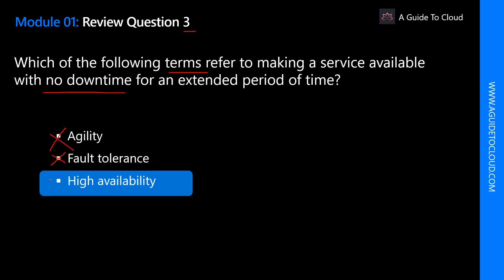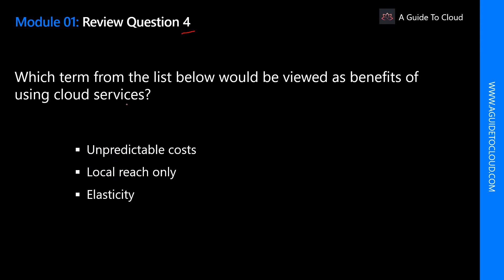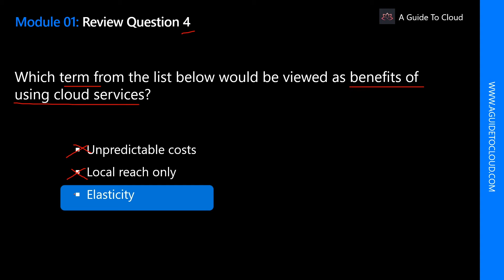Question 4: Which term from the list below would be viewed as a benefit of using cloud services? The keyword is 'benefits of using cloud services.' Unpredictable cost is not correct because you can predict the cost of cloud services — there are tools like the TCO calculator and Azure pricing calculator to help with that. Local reach only is definitely not correct because cloud is global, so you can provision services anywhere in the world or closer to a user. The correct answer is elasticity. Some other common benefits include agility and economics of scale.